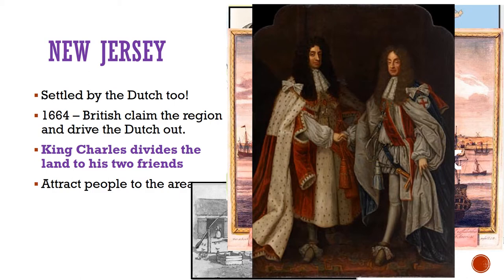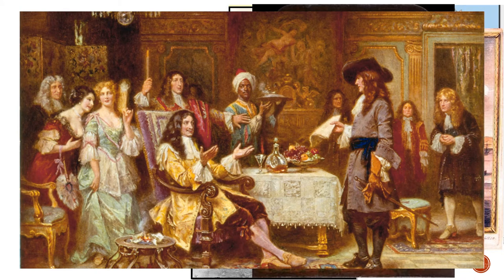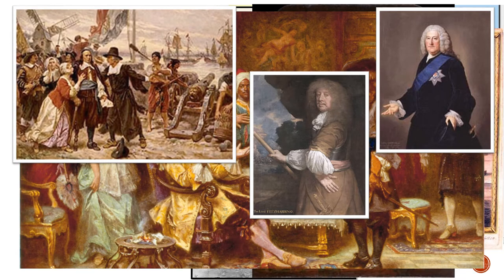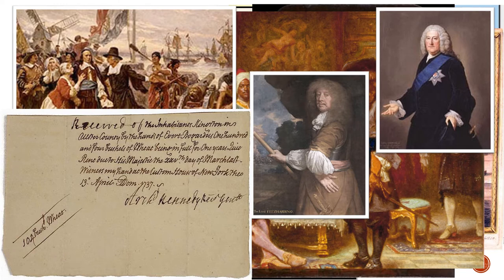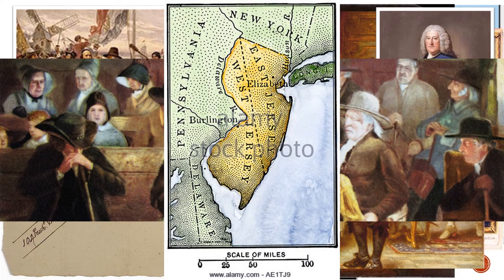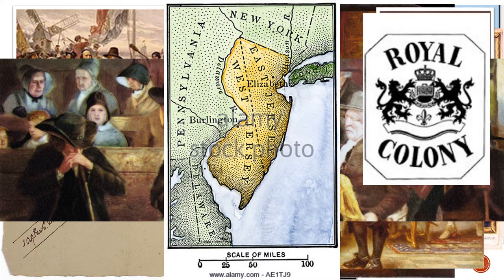Eventually, the king changed his mind and decided to divide the region and give the land between the Hudson and Delaware Rivers — New Jersey — to his two best friends, Sir George Carteret and Lord Berkeley of Stratton. Go ahead and draw a picture of the king giving the land to his two friends, Lord Berkeley and George Carteret. Don't forget the big hairdos that were so popular in England at this time. Carteret and Berkeley began attracting people to the area by offering land and guaranteeing religious freedom. In return, settlers were supposed to pay a yearly tax called a quit rent, but the quit rents proved hard to collect, which prompted the sale of the land to the Quakers in 1673. Upon the sale, New Jersey was divided into West Jersey and East Jersey. However, by 1702, the two divisions were united as the royal colony of New Jersey.